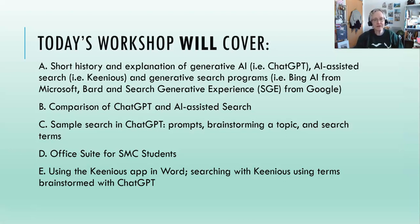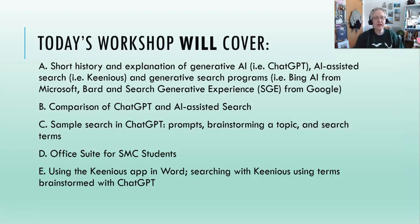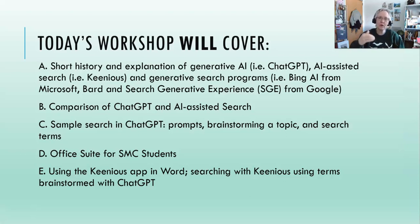The workshop will be a comparison of ChatGPT and AI-assisted search specifically after we discuss these things, and a sample search in ChatGPT that shows finding a prompt, brainstorming a topic, and using search terms. We'll talk quickly about the Office Suite, which is available for Santa Monica College students, and using the Kineas app in Word, using the brainstorming that we did with ChatGPT in a document in Kineas to find journal articles — it all builds on the beginning with the generative AI, heading into the Word app, heading into the document search.